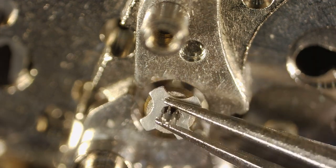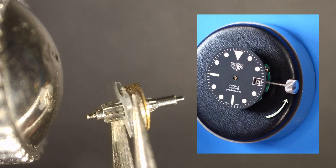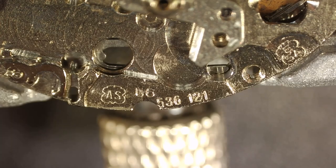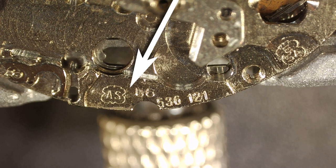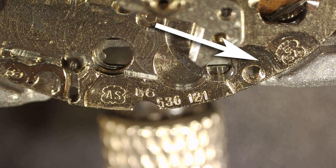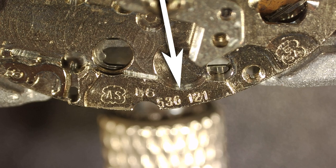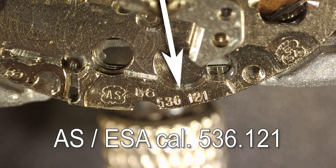With the parts out of the way you can see the maker's marks on the bottom of the main plate. Over on the left it says AS and then over on the right it says ESA. I guess these are both the manufacturers or it's co-manufactured. And then down at the bottom it says 536.121. Well with this information you know what the movement is, if you wanted parts for the watch you would simply specify AS slash ESA caliber 536.121 and you should be able to find either a replacement movement or parts for this movement.